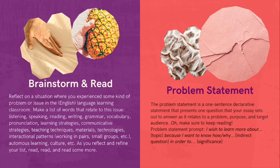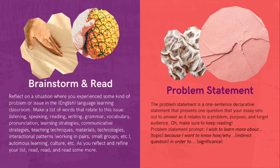After we completed the brainstorming process, we started thinking about a problem statement — a one-sentence prompt that starts 'I wish to learn more about,' then we present a general topic, 'because I want to know how' or 'I want to know why.' This is our indirect question, where it begins 'I want to know how something happens' or 'I want to know why something happens.' This indirect question is really at the root of our essay — our essay sets out to answer one question, and that question is in the form of an indirect question. Then we continue with the prompt 'in order to,' and then we introduce the significance — the relevance of your indirect question, what's the importance, what's the big picture, how might this help in a particular context where there's a problem.